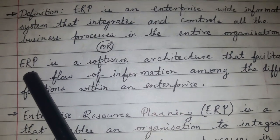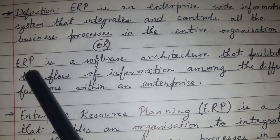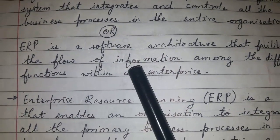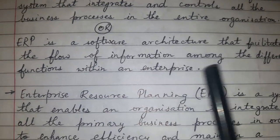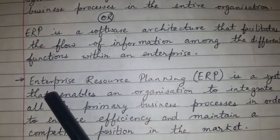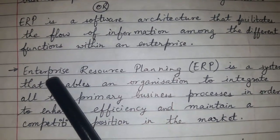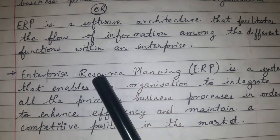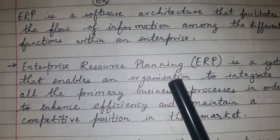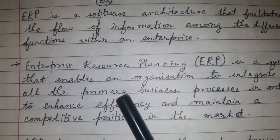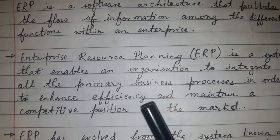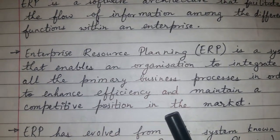Or it can be defined as: ERP is a software architecture that facilitates the flow of information among the different functions within an enterprise. To sum up, Enterprise Resource Planning or ERP is a system that enables an organization to integrate all the primary business processes in order to enhance efficiency and maintain a competitive position in the market.